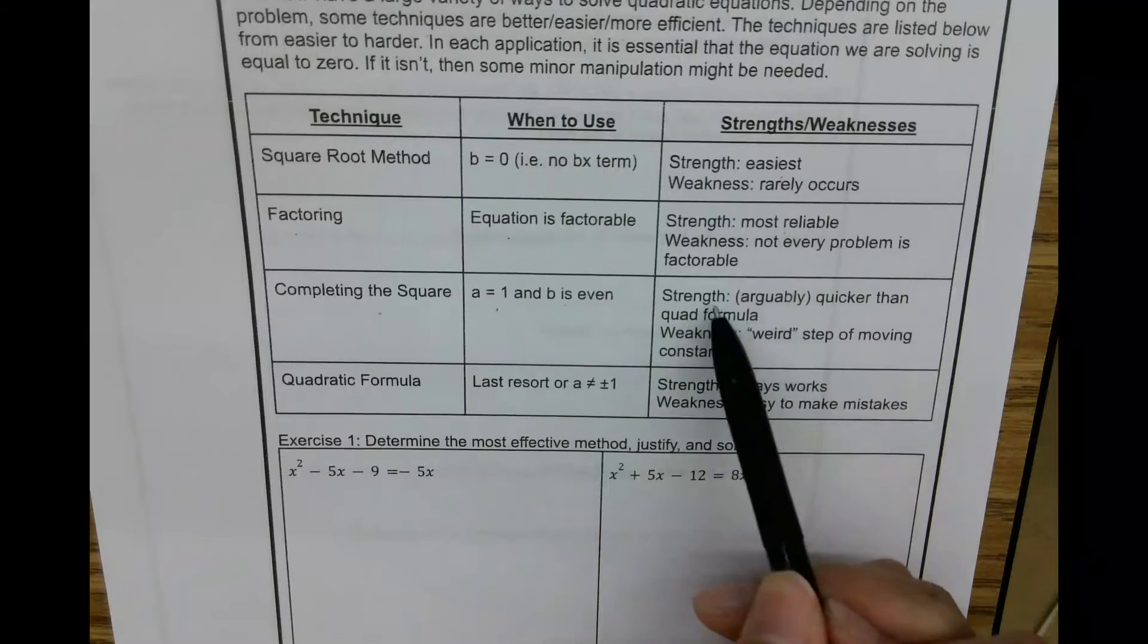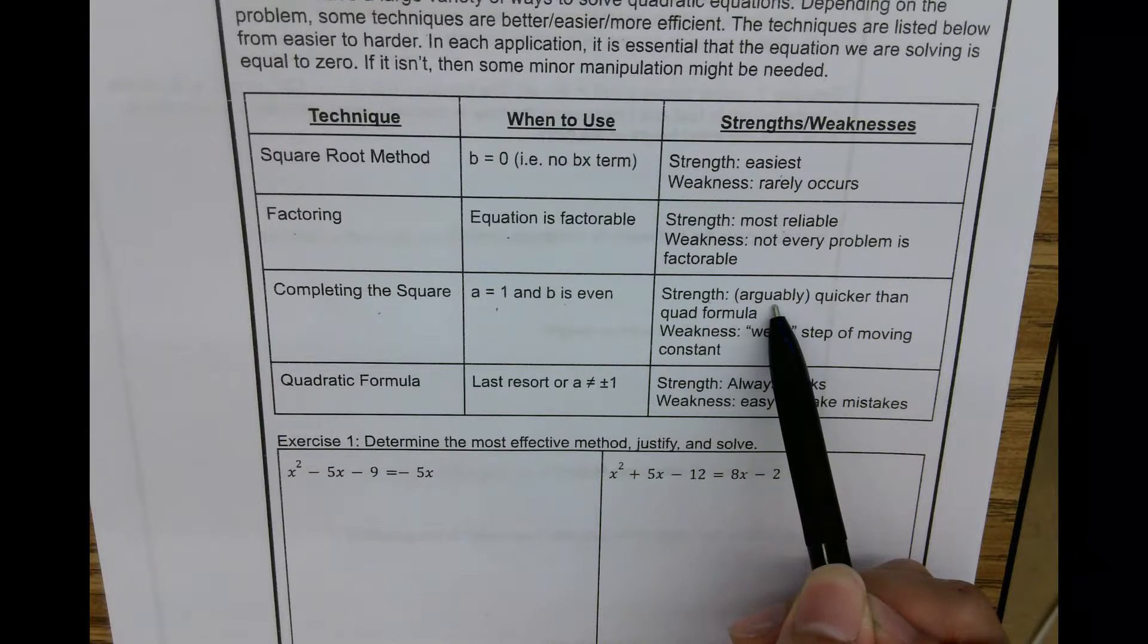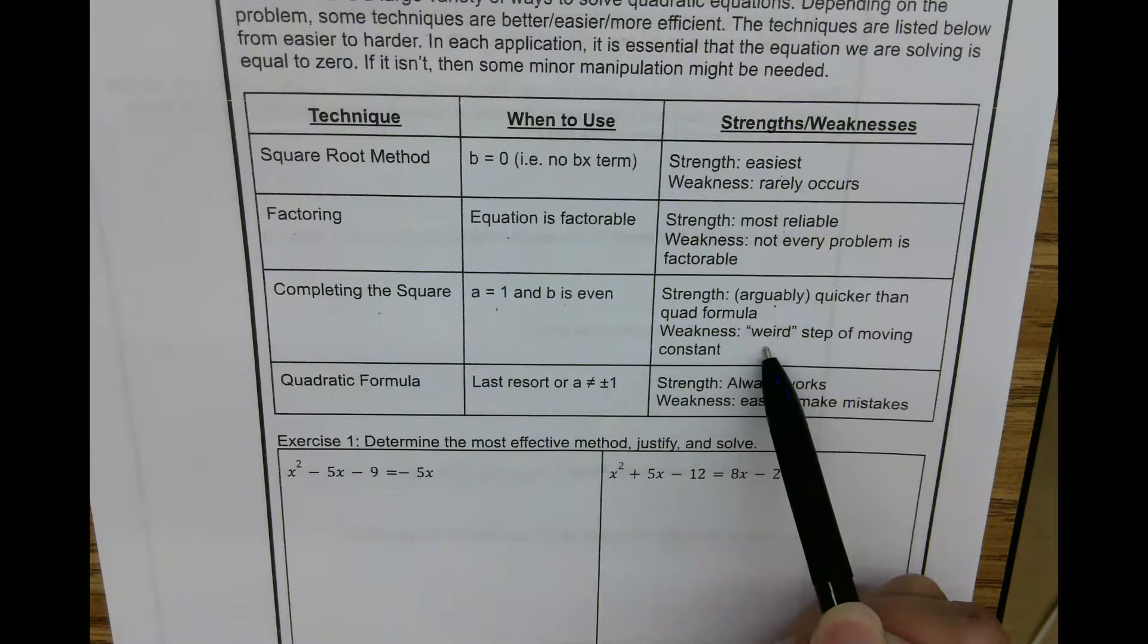The strength of it, some people would actually say it's probably quicker than the quadratic formula, especially those of us who can do that b divided by two square, factor it pretty quickly. Then completing the square is great. Also great when you get to further math classes when you do that a lot. The weakness, maybe some people find that weird step of moving the constant.